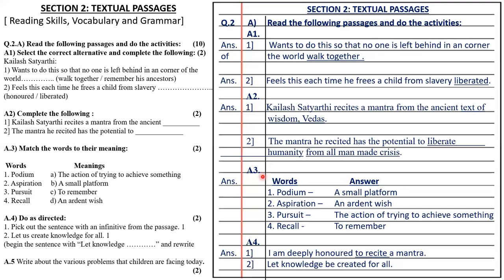Then A3, match the words with their meaning. You can write answers directly in front of the words. Podium is a small platform; aspiration is an ardent wish; pursue is the action of trying to achieve something; and recall is to remember.